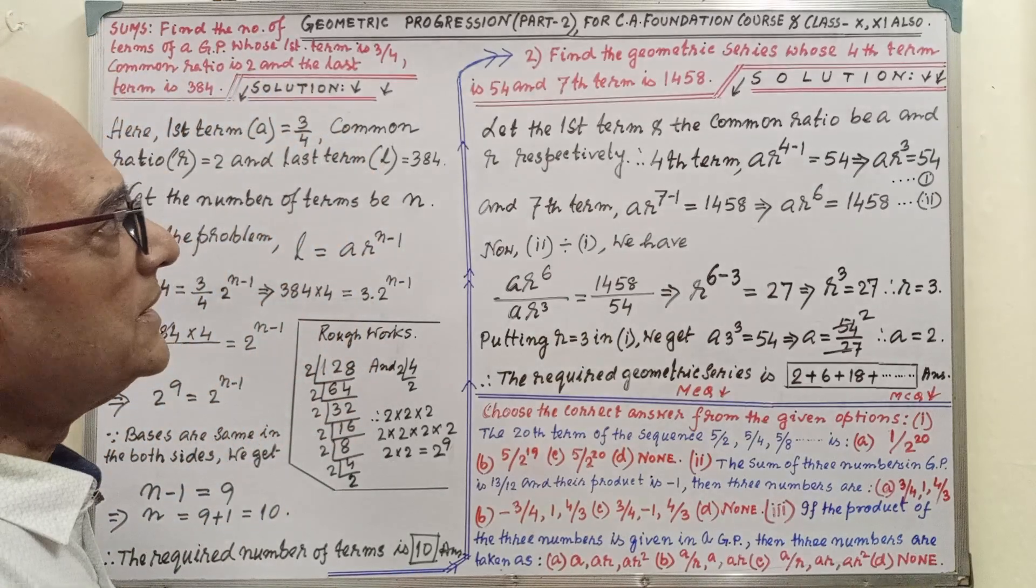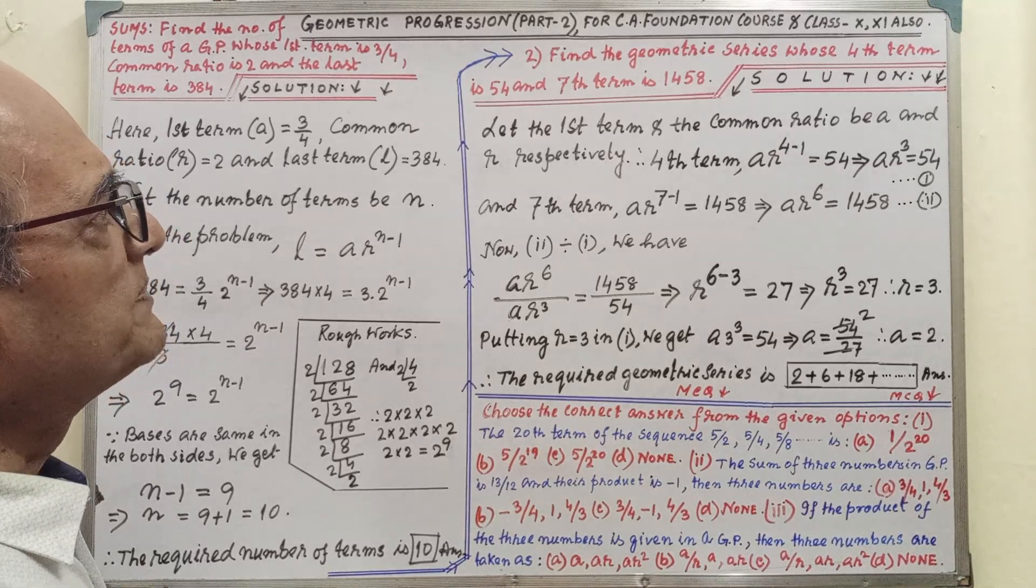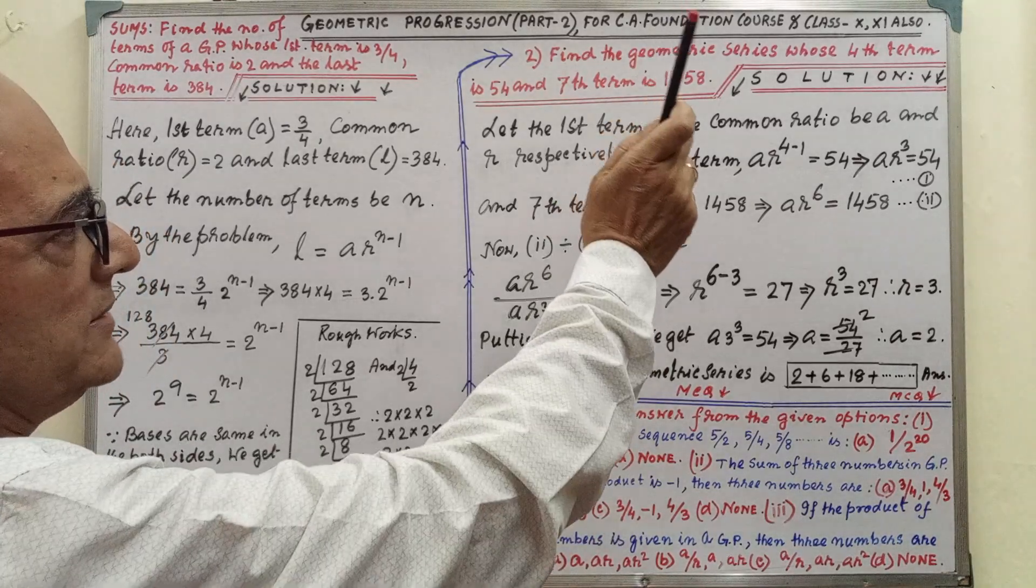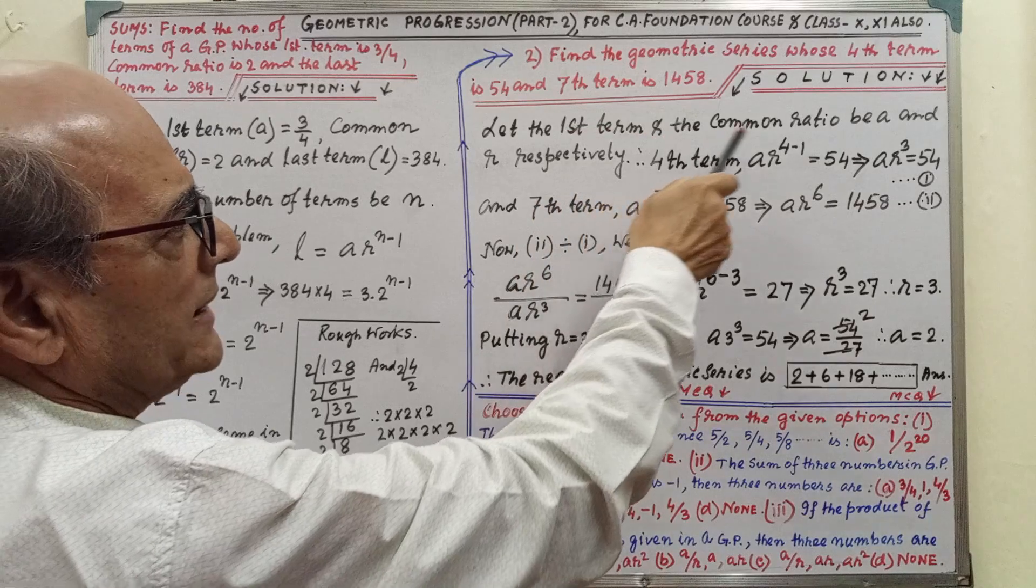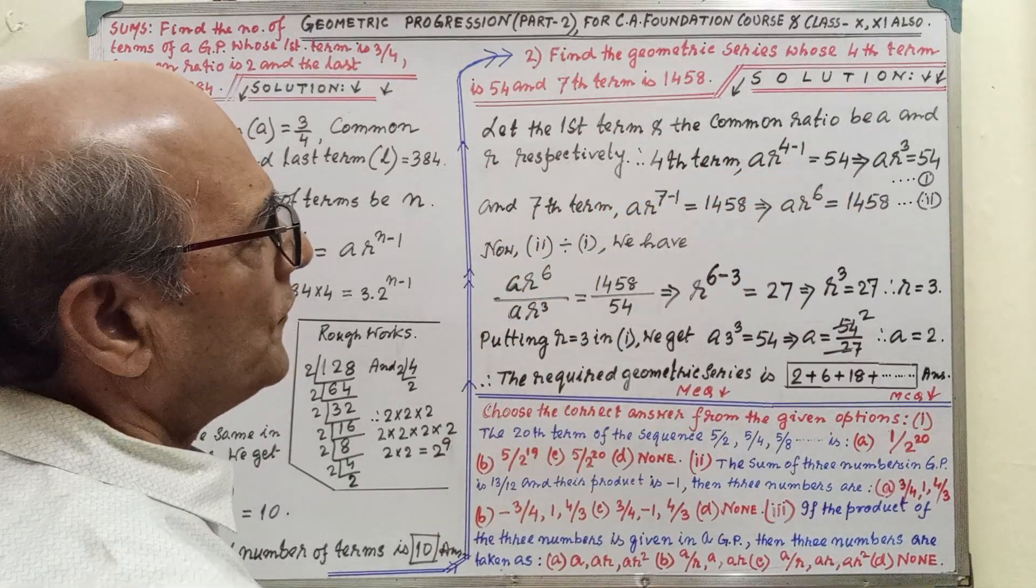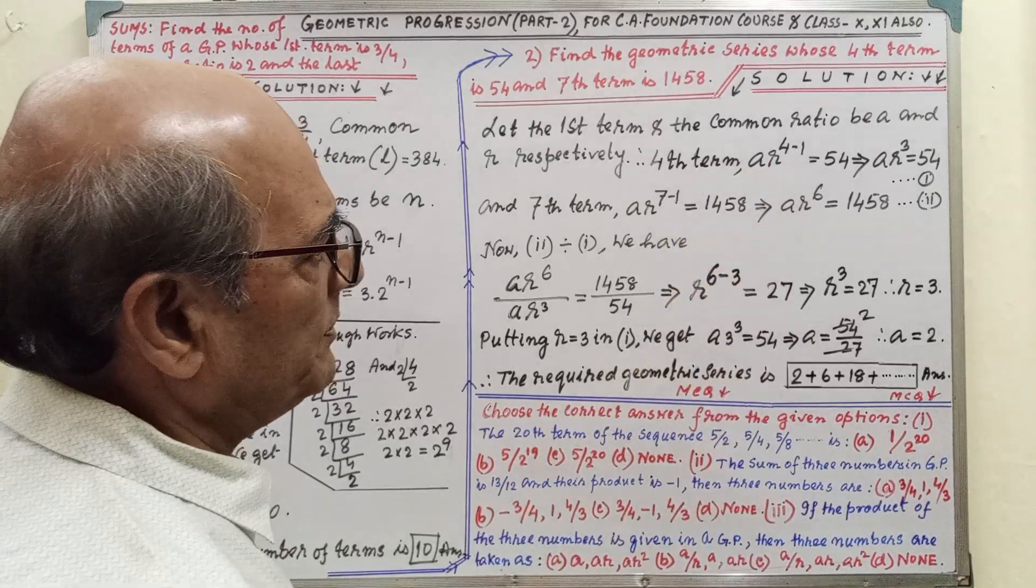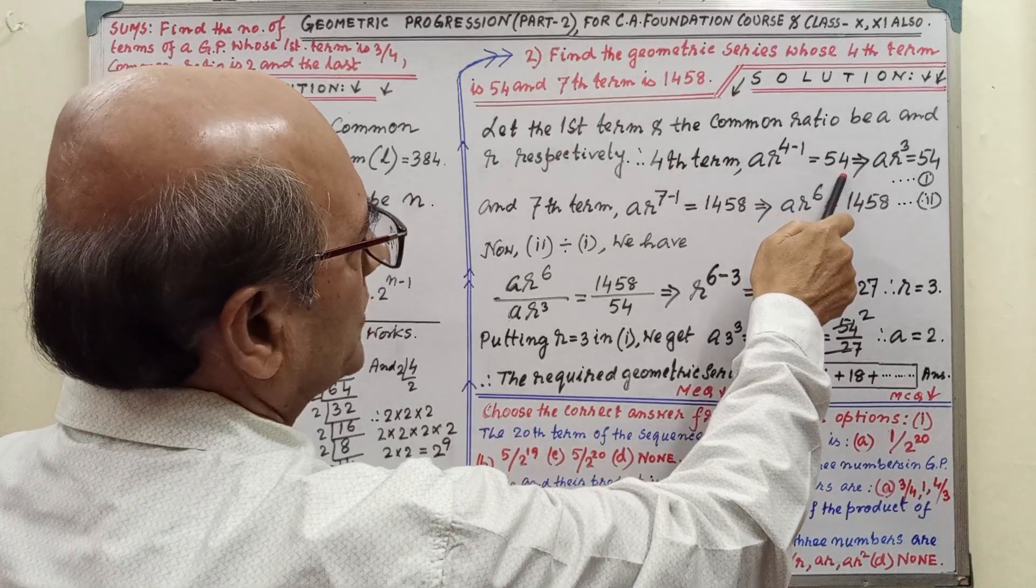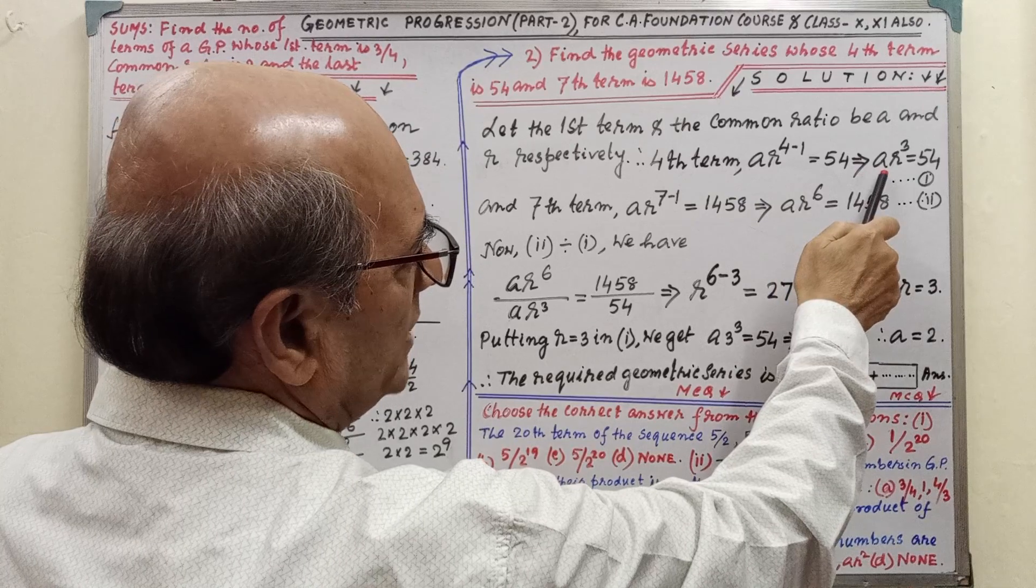Next sum: Find the geometric series whose fourth term is 54 and seventh term is 1458. Solution: Let the first term and the common ratio be A and R respectively. Fourth term, that is A·R^(4-1) = 54 given in our sum, and by simplifying we are getting A·R^3 = 54. This is denoting by number 1.